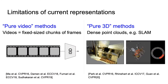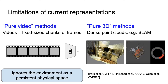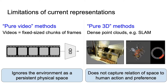Despite this link, current video models treat video as fixed-sized chunks of frames and completely ignore the underlying persistent environment. On the other hand, dense reconstruction methods build elaborate 3D point cloud models of spaces but don't factor in how these are relevant to human interactions and preferences, and commonly fail due to quick camera movements in typical ego videos.